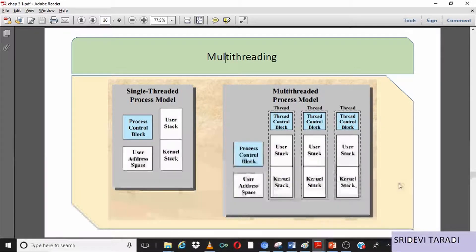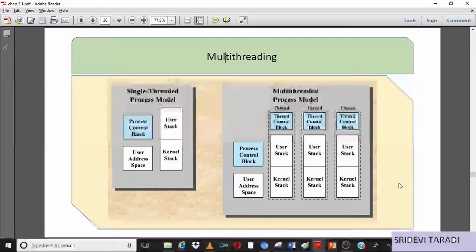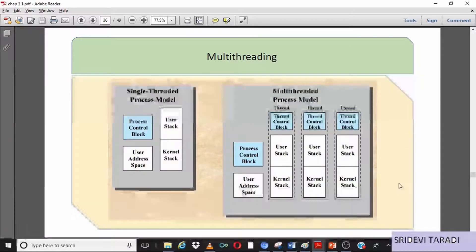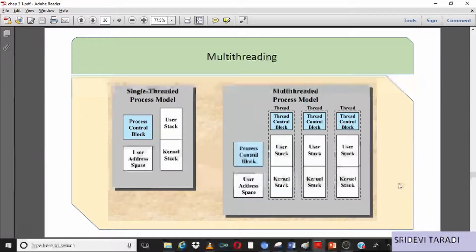Each process has a process control block (PCB) and a user address space. The PCB contains information about the state of the process, the stack register, its CPU utilization, and the program counter. Each process also has a user stack and a kernel stack along with it.